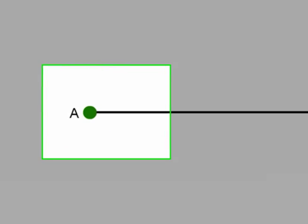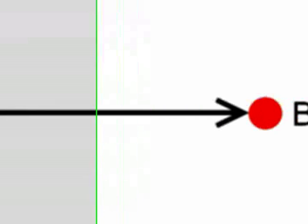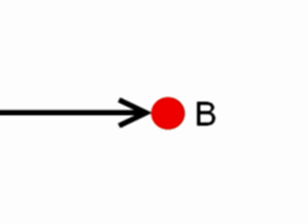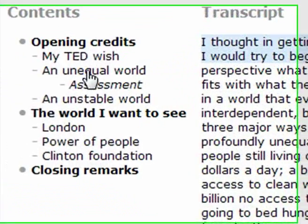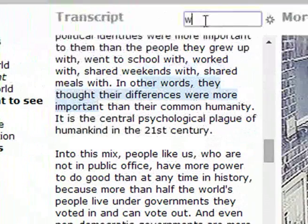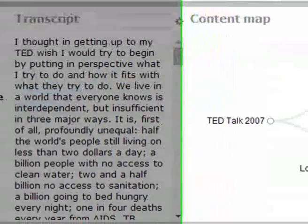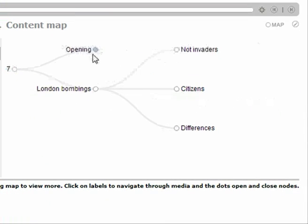QMedia has three primary design goals. First, it offers navigational tools that help viewers delinearize video. Digital media is typically consumed as a monolithic block viewed from the beginning to the end rather than scanned and read like text. QMedia provides tools such as a table of contents, clickable and searchable transcripts, and graphical concept maps that help viewers navigate through the media more efficiently.